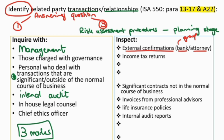Another document to inspect would be the share register. The share register shows who has shares in the business, and those shareholders would then be related parties.